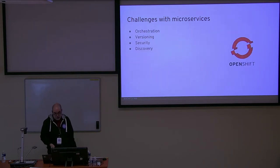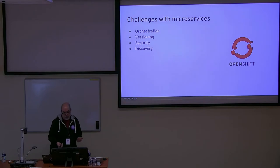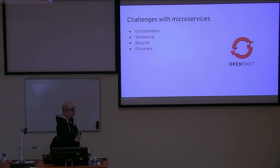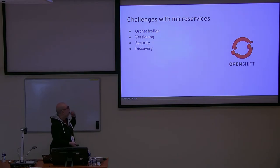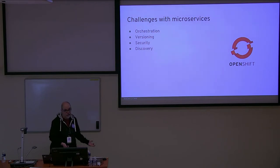There are tools which, in conjunction with good practices, allow you to overcome some of these challenges. Platforms such as OpenShift or Kubernetes allow you to solve some of these problems — like orchestration, versioning, and to a certain point security and discovery — by giving you tools to deal with them. This, coupled with good practices, should minimize most of the problems we talked about.